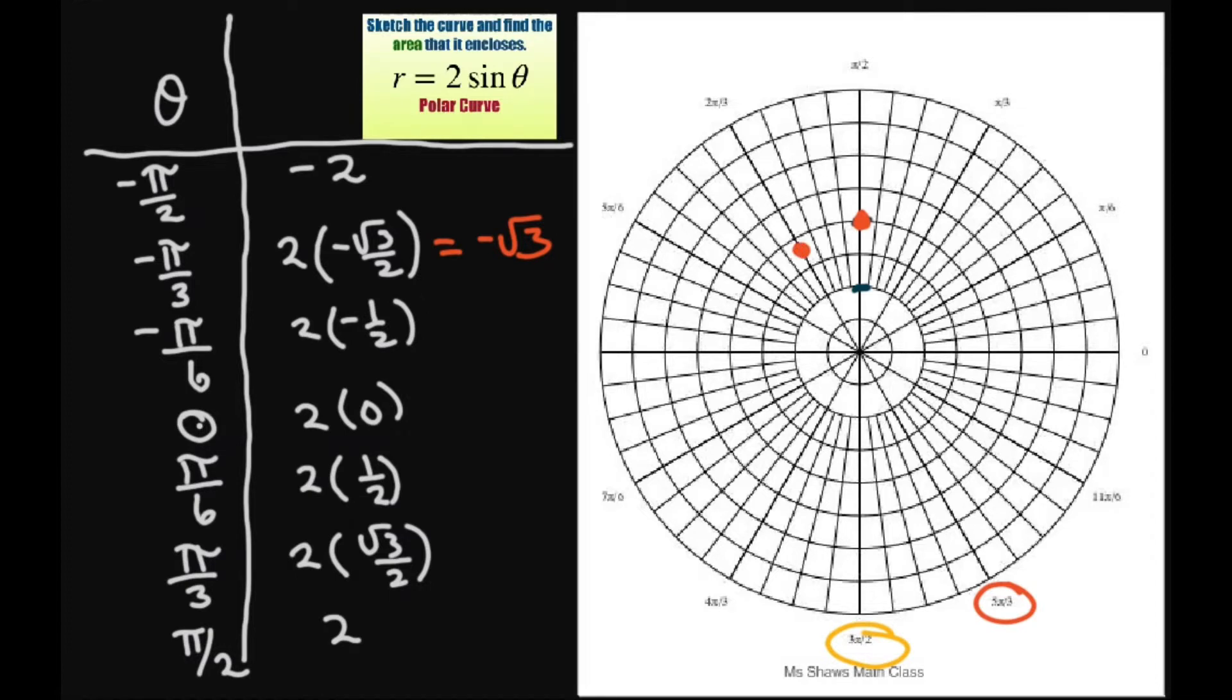And at pi divided by 6, that's negative 1. But it's negative pi divided by 6. So there's your 1. And then we're at 0. And then it just kind of goes around some more.